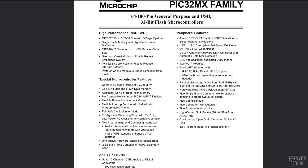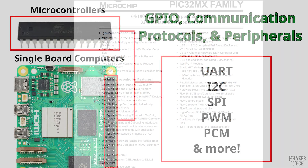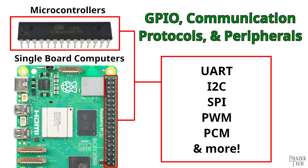Looking at the datasheet for this PIC microcontroller, we'll find UART, I2C, SPI, and PWM, but also additional peripherals not found on the Pi including ADCs, timers, capture inputs, comparators, and more. So hopefully now you have a better understanding of the various peripherals available on the Raspberry Pi's GPIO header and other SBCs and microcontrollers. This was just a general introduction, and I'll be getting into more details on these in future videos.